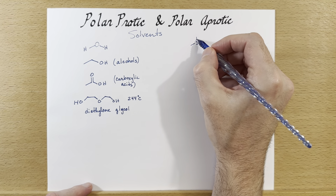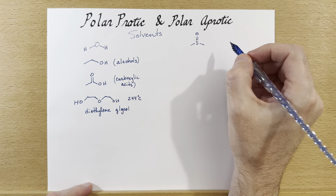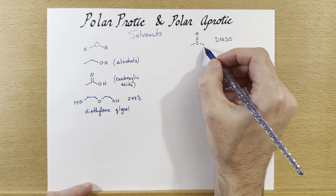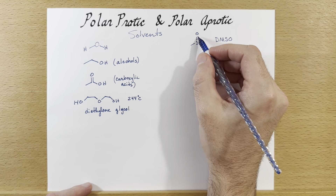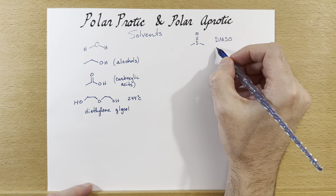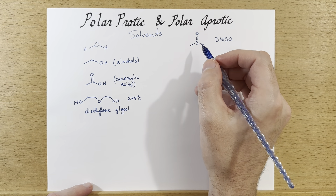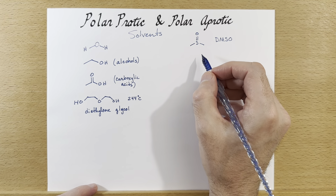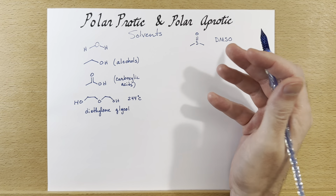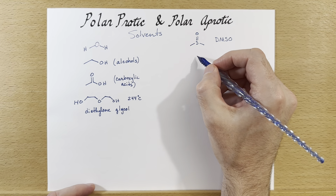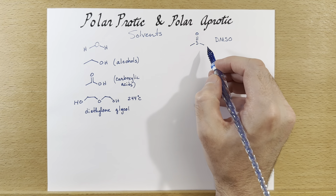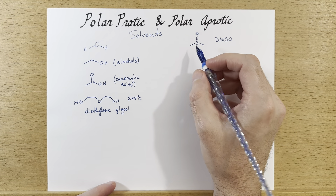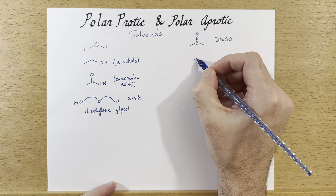Now let's look at the aprotic solvents. A great one is dimethyl sulfoxide, abbreviated DMSO. There are two methyl groups — that's the 'dimethyl' — and the sulfoxide group is in the middle. This is a great solvent; it will dissolve most things and is also miscible with water, which is a useful feature. There are no protons that can easily come off, so this is polar aprotic.